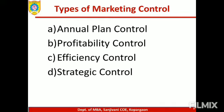Moving ahead, there are four types of marketing control: the first is Annual Plan Control, the second is Profitability Control, the third is Efficiency Control, and the fourth is Strategic Control.